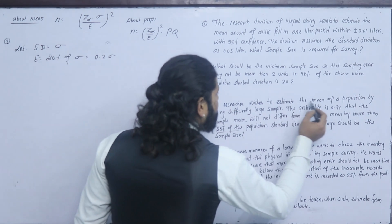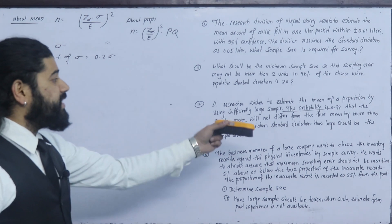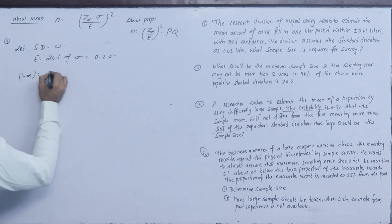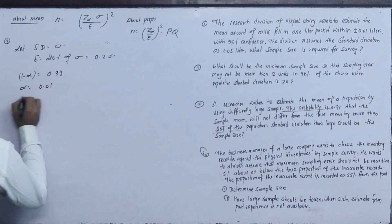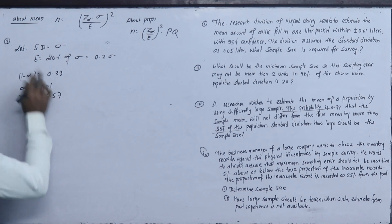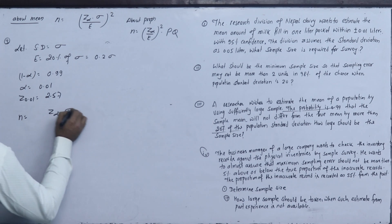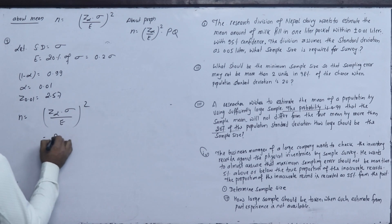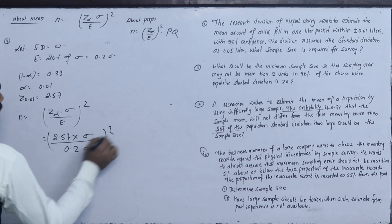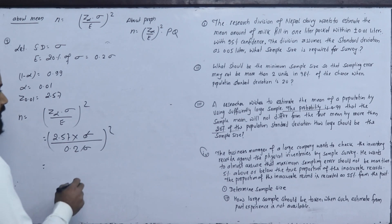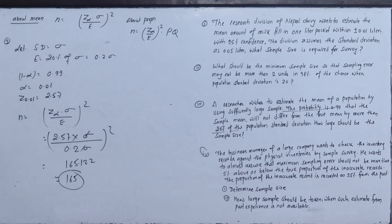The probability (confidence level) is 0.99, meaning 1-alpha = 0.99, so alpha = 0.01 and z = 2.57. Sample size n = (z-alpha × σ / e)² = (2.57 / 0.2)² ≈ 165. There are 165 samples required.